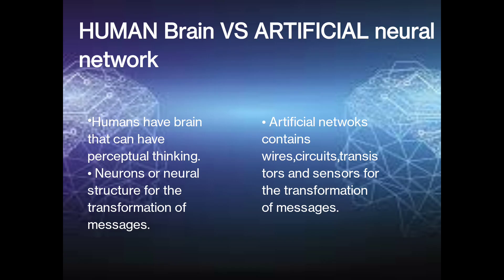Human brain versus artificial neural network. Human brain has perceptual thinking. Neurons are neural structures for the transformation of messages. But an artificial network contains wires, circuits, transistors and sensors for the transformation of messages.